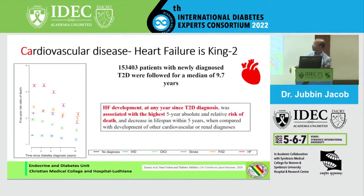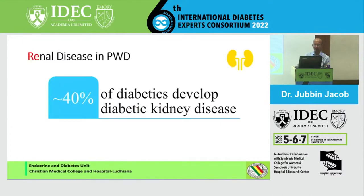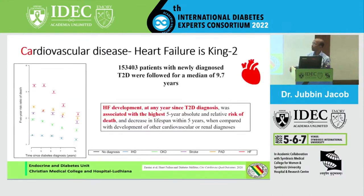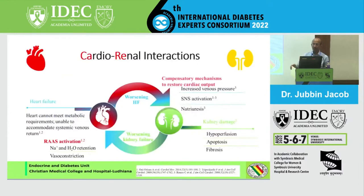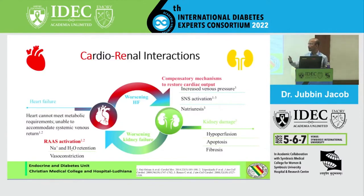Renal disease is also important. Just below heart failure and peripheral artery disease is renal failure. Renal disease in people with diabetes is very common — 40% of them will develop it, and diabetes is the leading cause. We know the interactions between kidney and heart: when you have heart failure, the body tries to protect the heart by measures which are going to damage the kidney. When you have kidney failure, the body's response may damage the heart. So it is a bad loop.